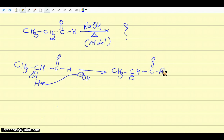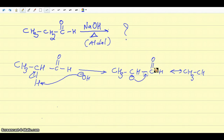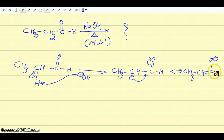This enolate is actually resonance stabilized, so you can draw another resonance form where you move these electrons and place a negative charge on the oxygen. You'll have a double bond there and a negative charge on the oxygen. Because of this resonance form, this is a quite stable enolate — this is the enol form of the enolate.